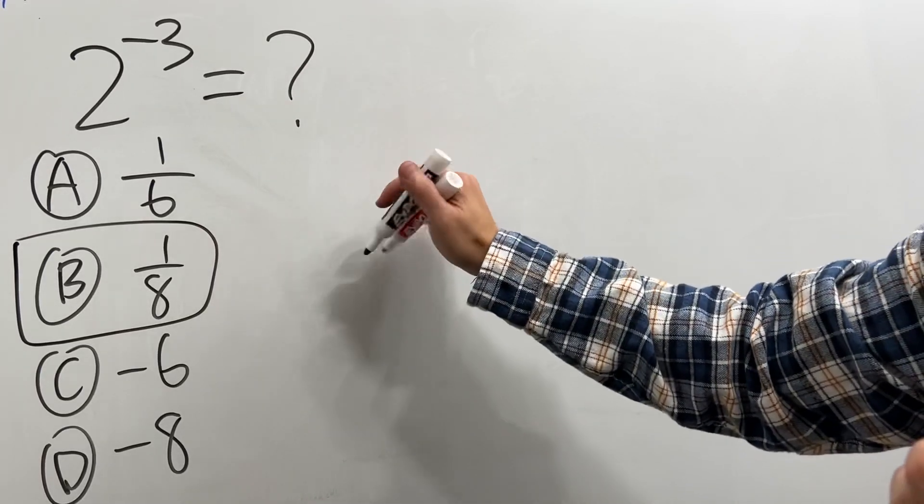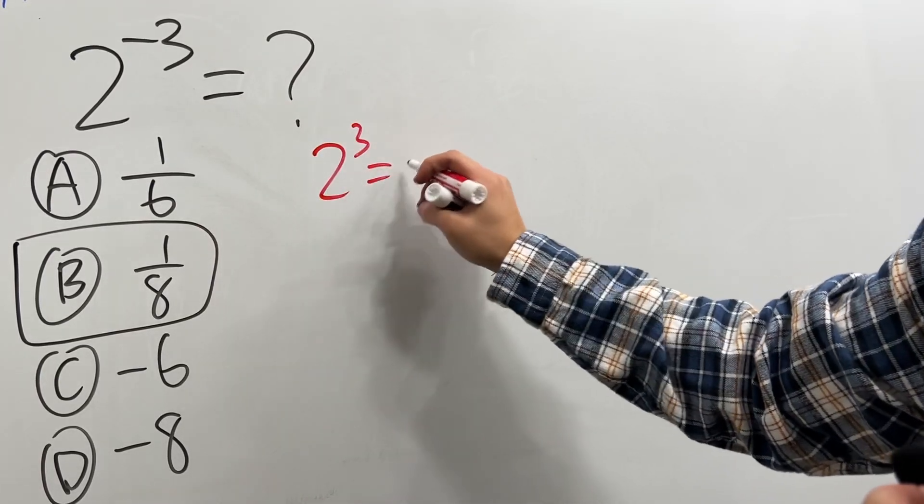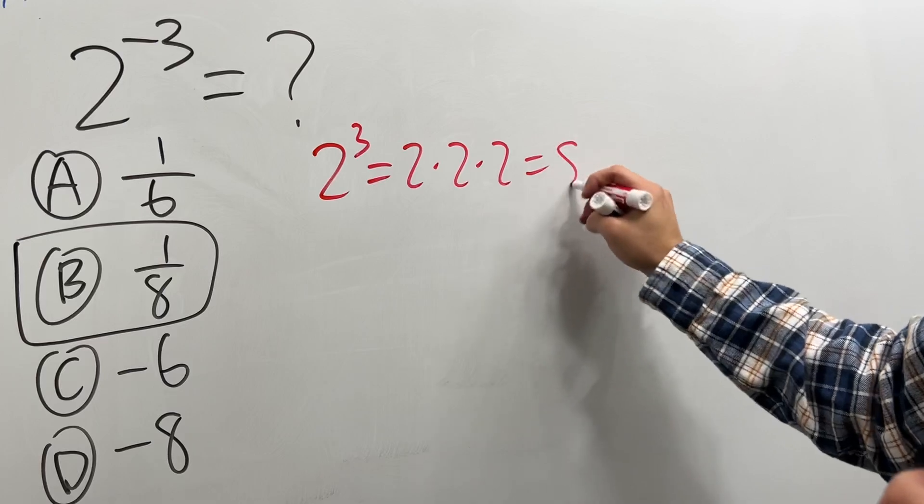Let's do this the long way. Check this out. If we have 2 to the 3rd power, this means 2 times 2 times 2, which is 8.